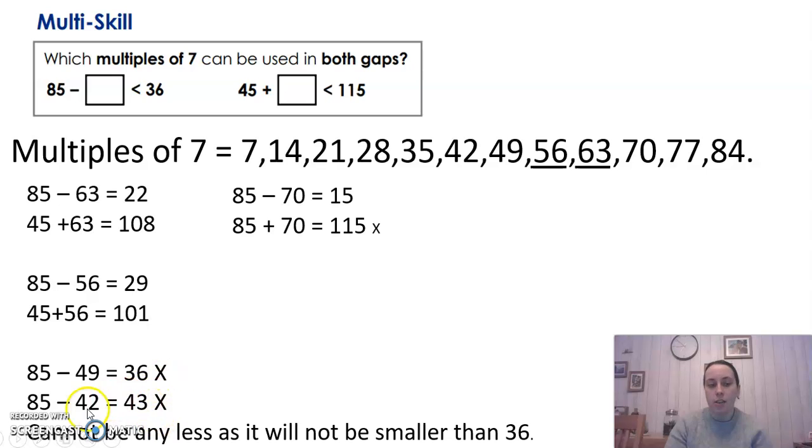42 doesn't work either because 85 take away 42 is 43. 43 is more than 36. So that doesn't work either. So it can't be any of those multiples now. It can't be any of them.